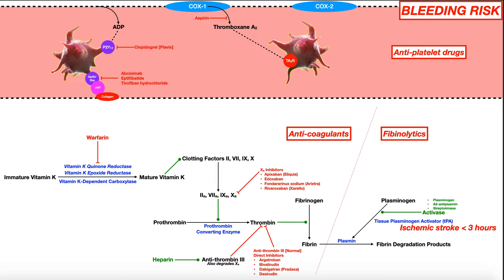At the bottom of the screen, understand that there are other types of drugs that we'll talk about in other videos. Over here we have the fibrinolytics. These are drugs that break down fibrin — specifically existing fibrin. So you already have to have an existing clot in order to use a fibrinolytic. These help to activate plasmin, and that degrades fibrin.